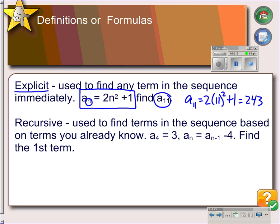The recursive formula though is different because it looks like this and it has two parts to it. Your first part gives you a starting point, and so this just says the fourth term in the sequence is 3.